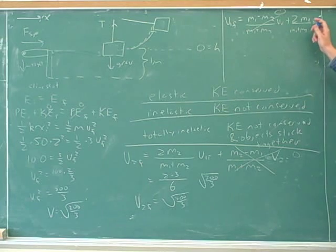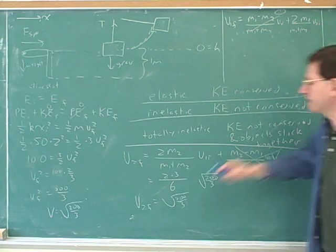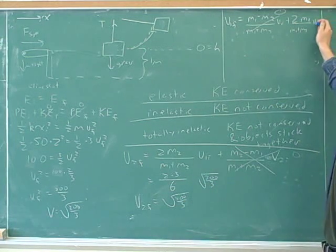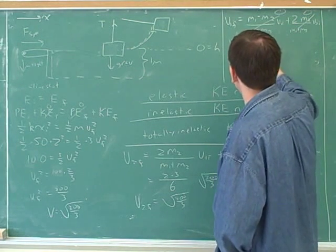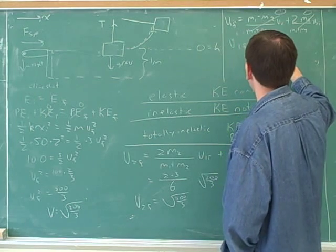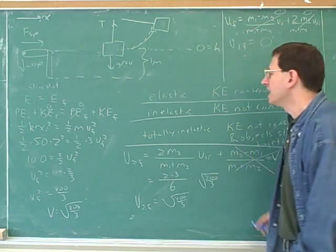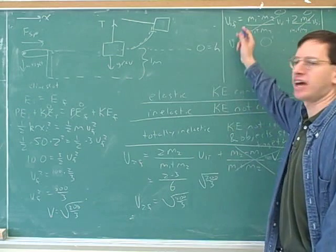That's right. So we don't want to plug in the root 200 over 3 here, that's the final. The initial velocity of the target was zero. So what's the speed of the rubber ball after it hits the target? Zero meters per second. Yeah.